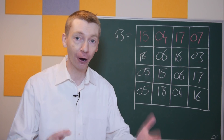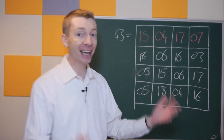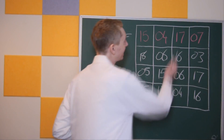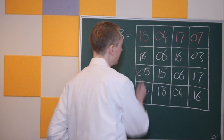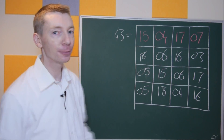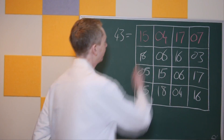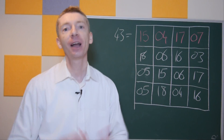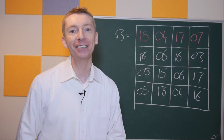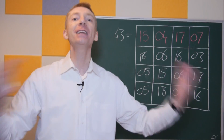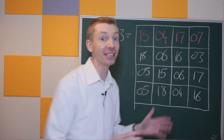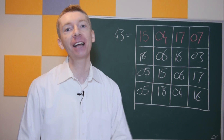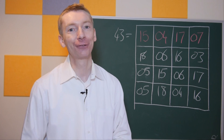The rows add up, the columns add up, the diagonals and the broken diagonals — by which I mean 17 and 3, and 5 and 18 add up to the birthday number. Also 4, 18, 17, and the other 4 add up to that birthday number. In fact, there are many ways that you can use this birthday magic square to add up to that magic number of 43.